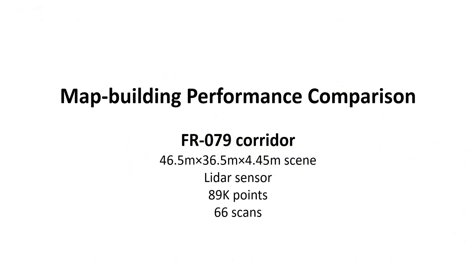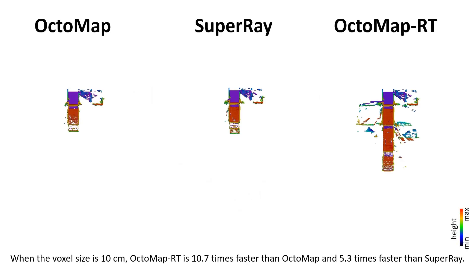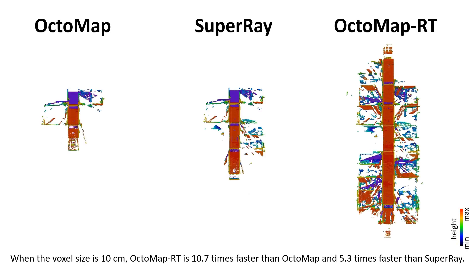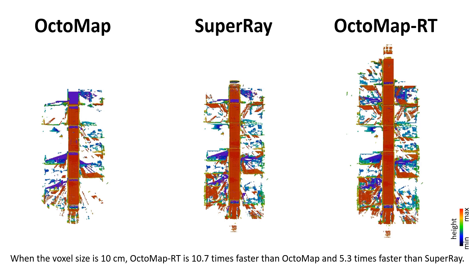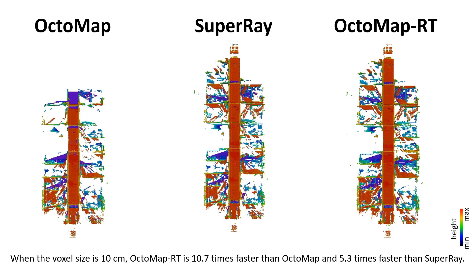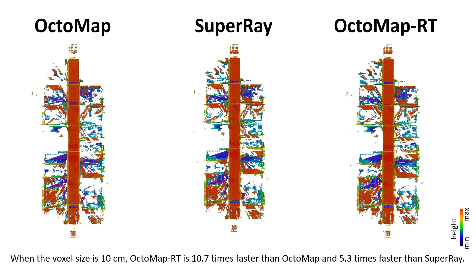We use the FR079 corridor data set from a LiDAR sensor and compare building speeds. The size of the map is 46.5 meters by 36.5 meters by 4.45 meters, with 89,000 points per scan. The map is built with voxel sizes of 10 centimeters.